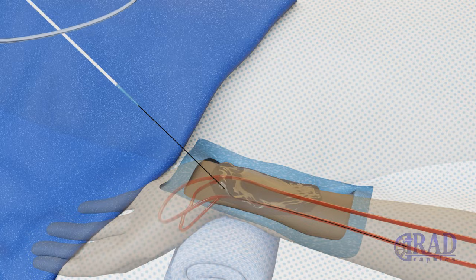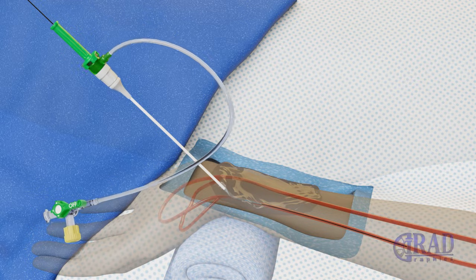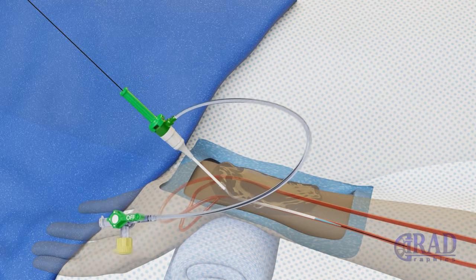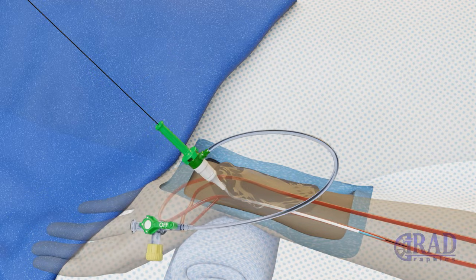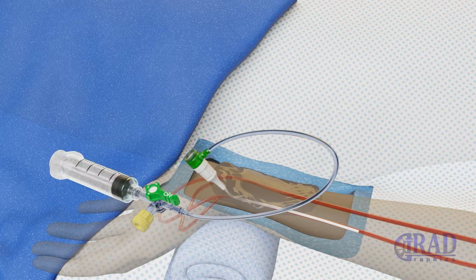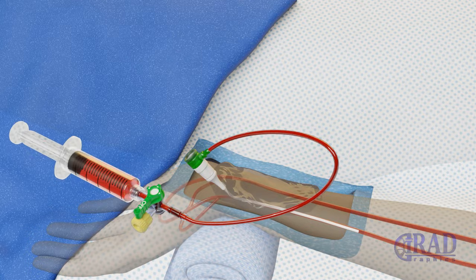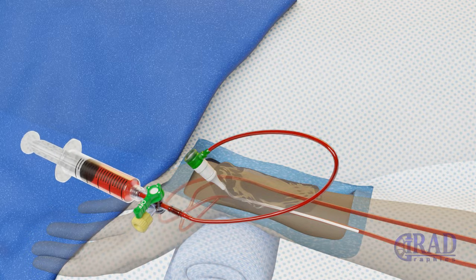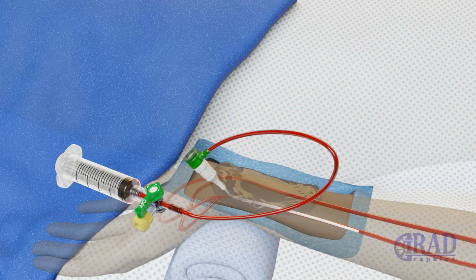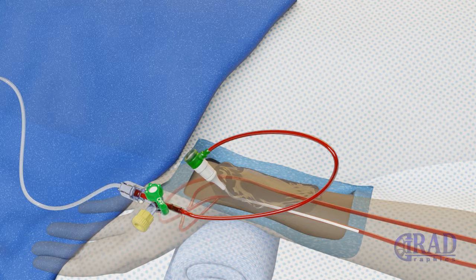Once the sheath is advanced over the microwire and properly placed within the left radial artery, the microwire and inner dilator are removed. A mixture of vasodilators is injected through the sheath to avoid arterial spasm. Then normal saline infusion is started through the sheath to avoid possible clot formation.